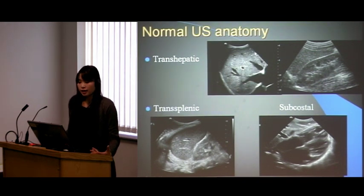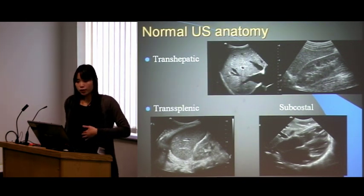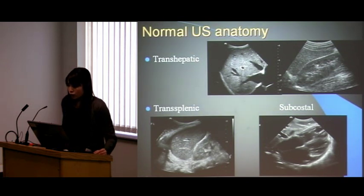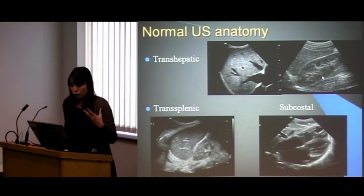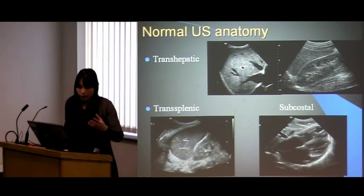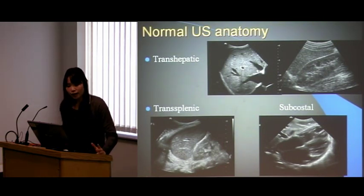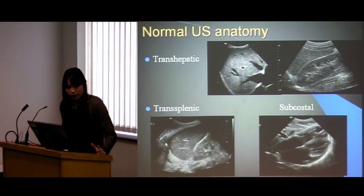Normal ultrasound anatomy — transhepatic or transcostal view: you can see the nice echogenicity of the liver, the hepatic veins which are perhaps slightly dilated, and your normal kidney on the right side. You need to find your normal anatomy: right kidney, liver, diaphragm. And on the left, the kidney and spleen with a nice diaphragm and some rib shadowing.